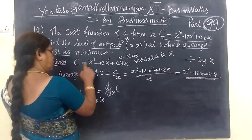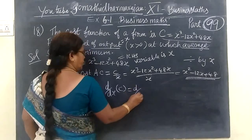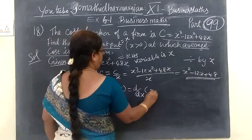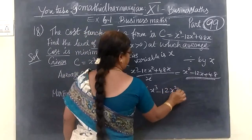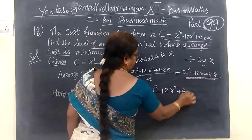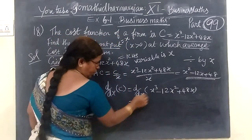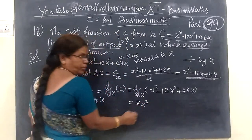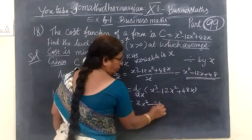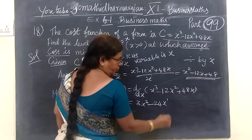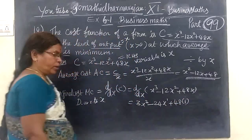Marginal cost — this is dC/dX, equated. So the marginal cost is 3X squared minus 24X plus 48.